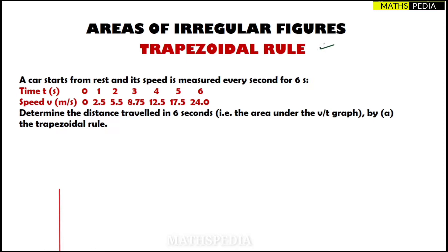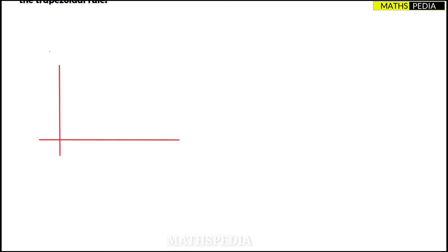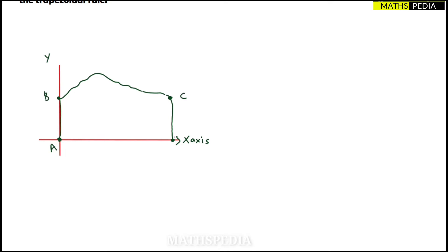In the trapezoidal method, let us consider an x-axis and a y-axis. Here one irregular shape is present — it starts here and ends over here. We need to find the area of this portion. Let me name the four corner points: A, B, C, and D.